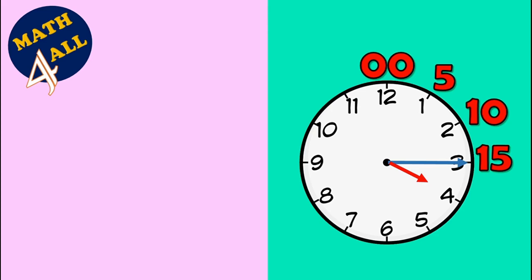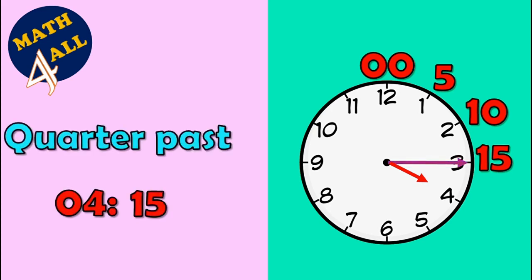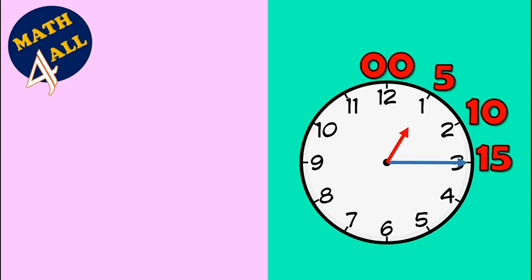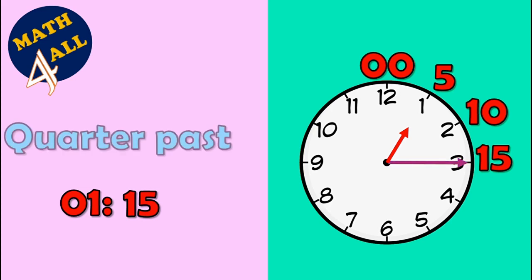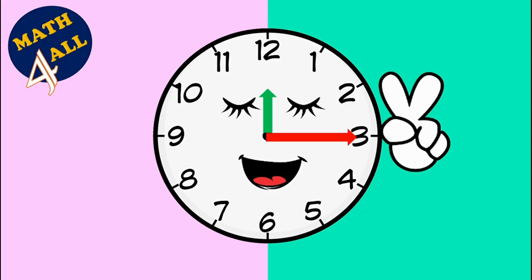Let's see another example — can you help me? What is the time? Look at the short hand, it's on four. It's four, and the long hand is on three, it means fifteen minutes. It's four fifteen, or it's quarter past four. The last example — what is the time? It's one fifteen, or it's quarter past one. Good job, and this was our lesson, thank you.